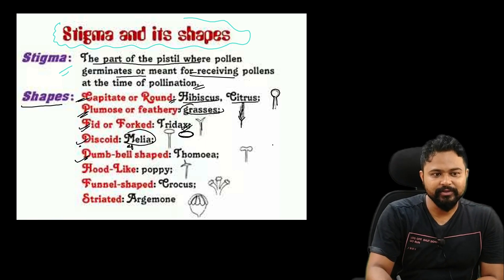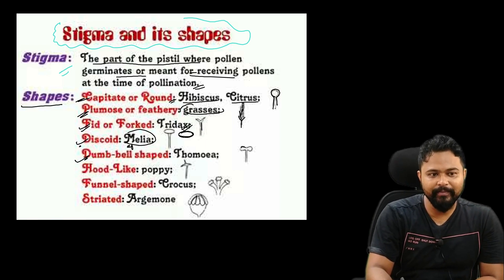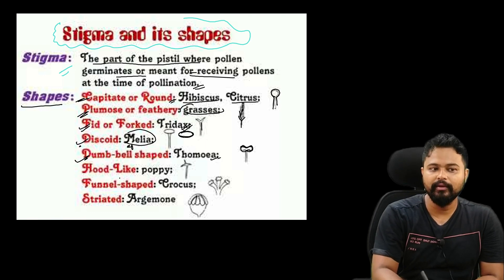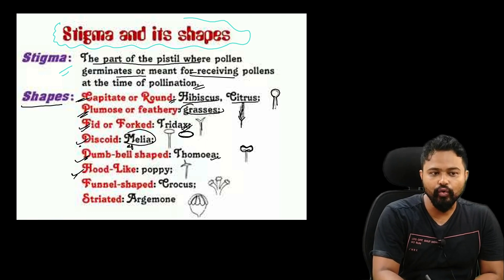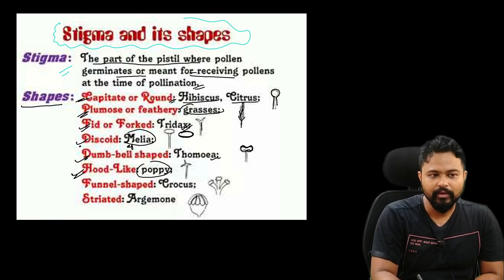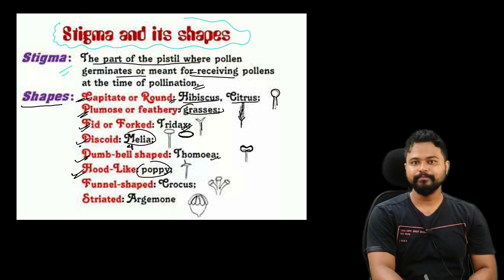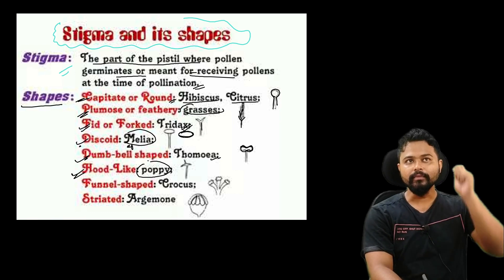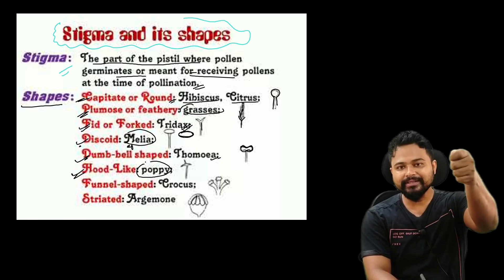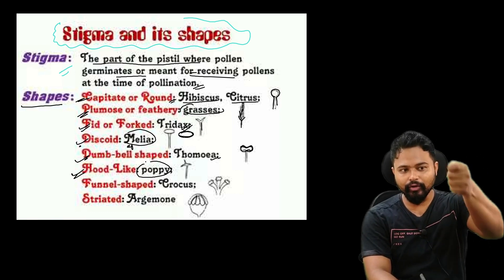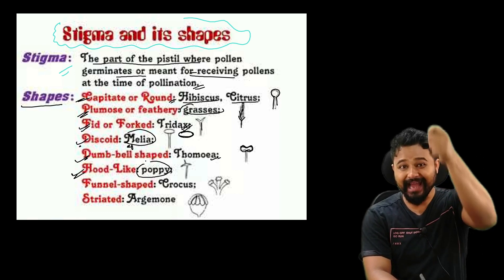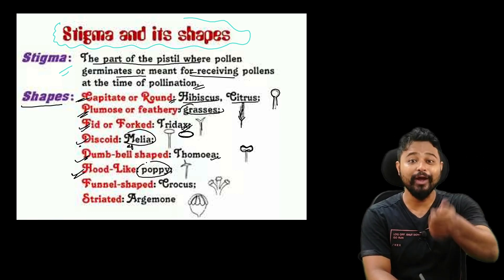Fifth shape: dumbbell-shaped. Sixth shape: hood-like. Example: Poppy — the stigma is hood-shaped, like a cap or hood.